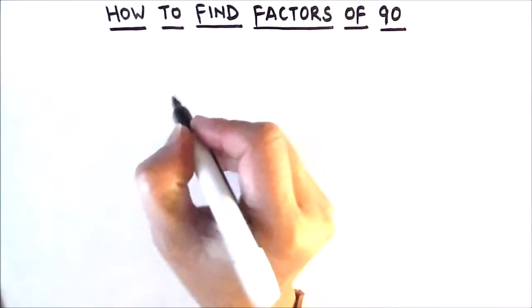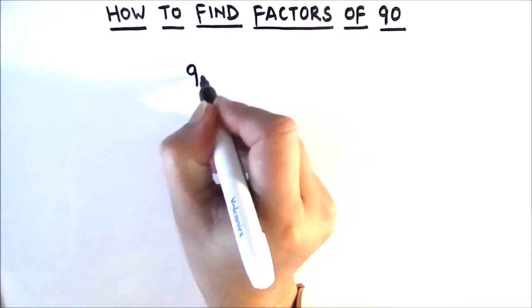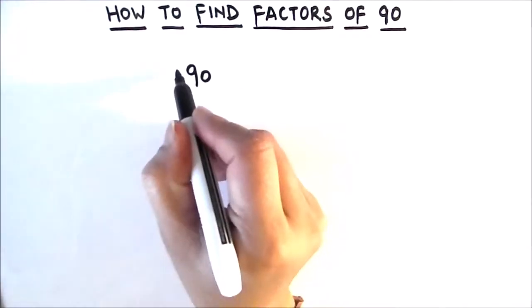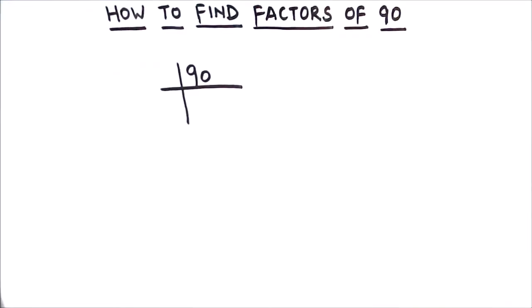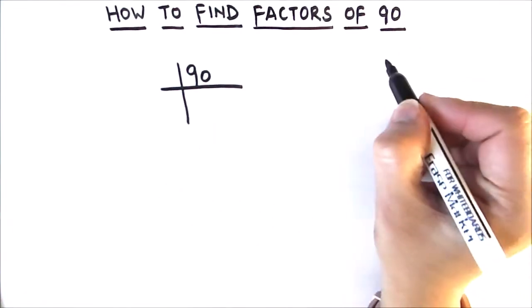Where we divide 90 by different numbers and check whether it is fully divisible or not. If it is divisible, then that prime number will be the factor of 90. So let's start dividing 90 by prime numbers.